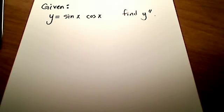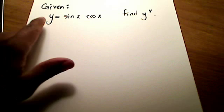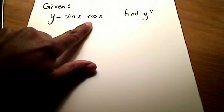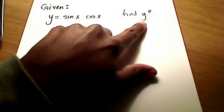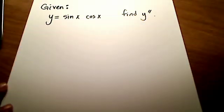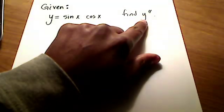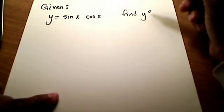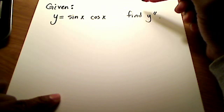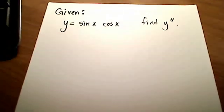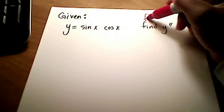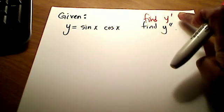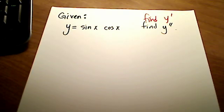In this problem, we are given that y is equal to sine x times cosine x, which is really just the product of these two, and we're asked to find the second derivative. To find the second derivative y double prime, we need to find y prime first, and then take the derivative of that, which gives us the second derivative.